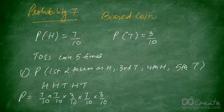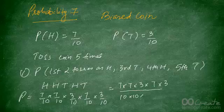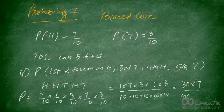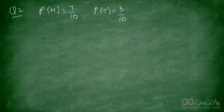When you multiply this out, you get 7 × 7 × 3 × 7 × 3 divided by 10 × 10 × 10 × 10 × 10, which simplifies to 3087 divided by 100,000. So this is the probability that the first two tosses are heads, the third is a tail, the fourth is a head, and the fifth is a tail.